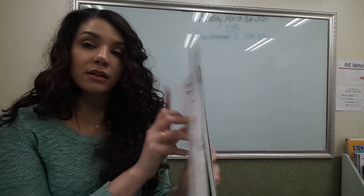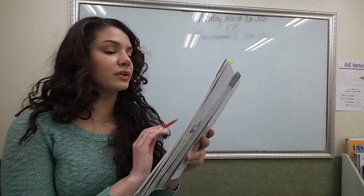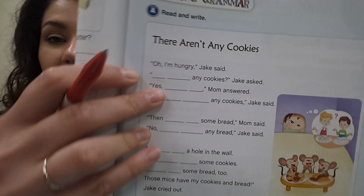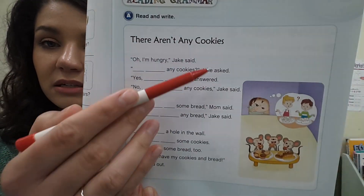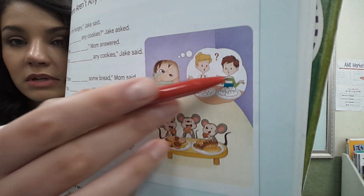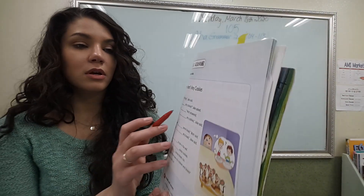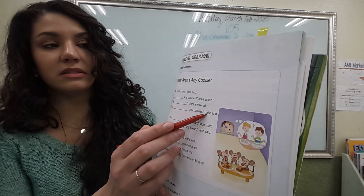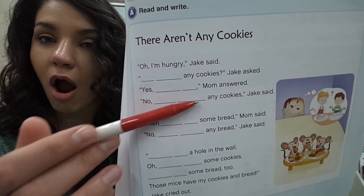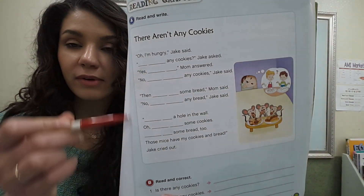Let's read: 'I'm hungry,' Jake said. 'Are there any cookies?' Jake asked. Mom answered: yes, there are — because mom thinks there are some cookies. But there aren't — 'no, there aren't any cookies,' Jake said. So: are there any cookies? Yes, there are. No, there aren't any cookies. Try the rest by yourself.